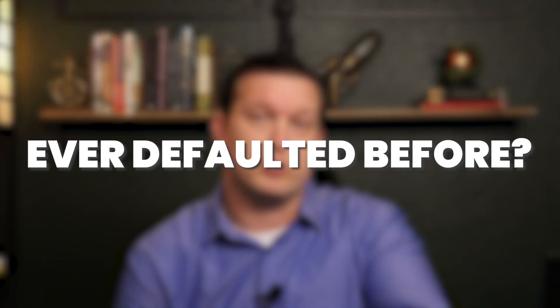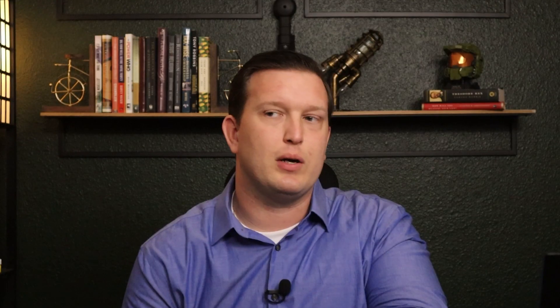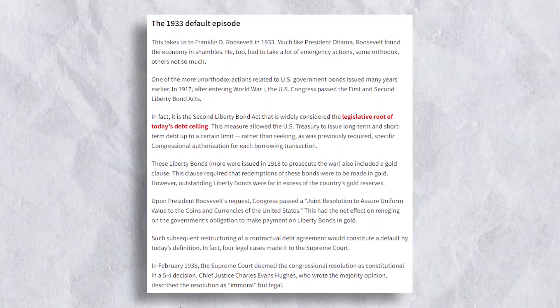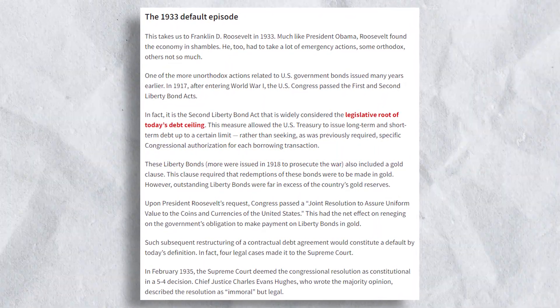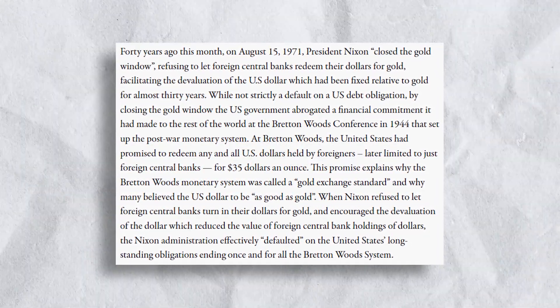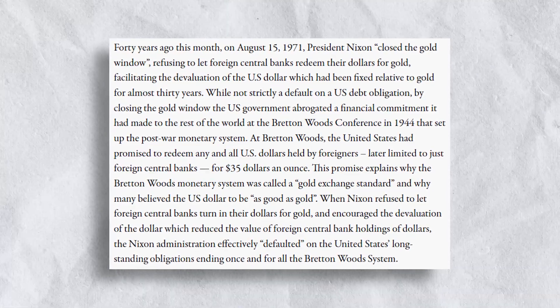So in today's episode, I want to explain the two most common questions: will the US default and has it ever defaulted in the past? And if it does default, what does that mean? All of these questions I'm going to be answering today. So with that being said, let's get into it. The first question I want to talk about is, has the US government ever defaulted before? If I just had to give you a one sentence answer, my answer would be no, it's never defaulted outright.